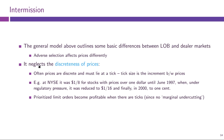The model we just looked at neglects the discreteness of prices, which is a very salient empirical issue. In real-world markets, prices must lie at a tick — a particular price grid. At the New York Stock Exchange until 1997, you could only quote prices in increments of one-eighth of a dollar for stocks over one dollar. In 1997 this was reduced to one-sixteenth of a dollar, and only three years later it was further reduced to one cent.